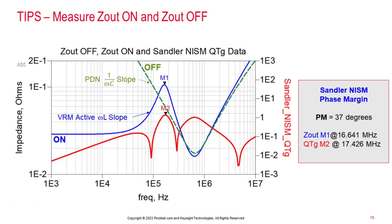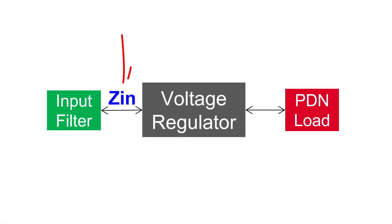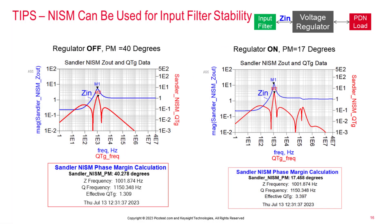NISM can also be applied to measurement data, to simulated data results using the Sandler state-space voltage regulator model, or even to simulated data from simplified voltage regulator RL models. NISM also works on the input impedance of a voltage regulator. The input filter stability — often referred to as the Middlebrook criteria — like NISM, is a minor loop assessment, so NISM works there as well. And you don't need to separate the input filter from the VRM.